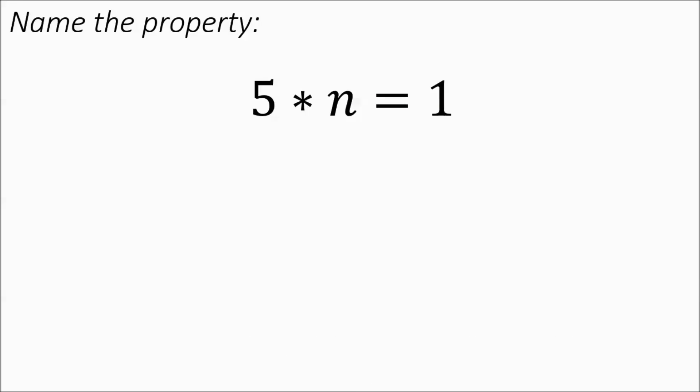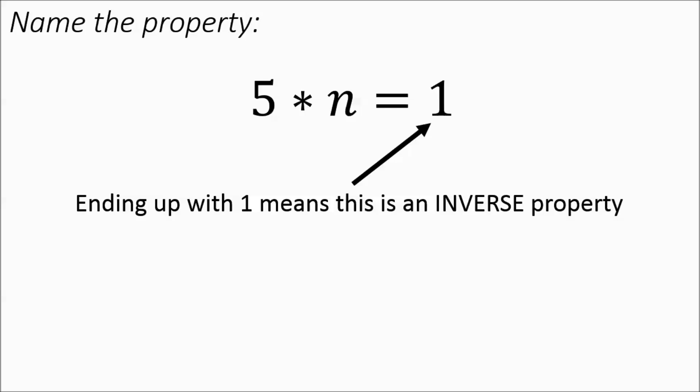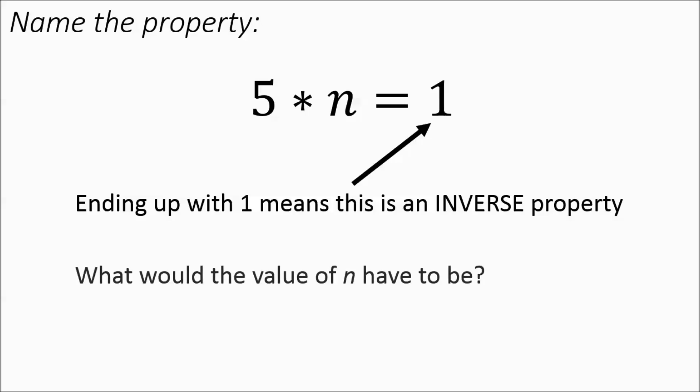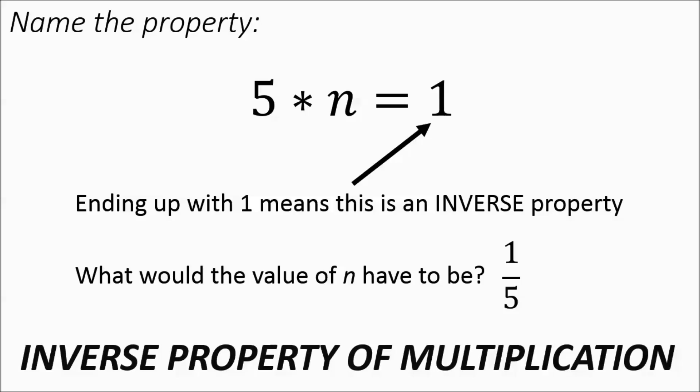We've got 5 times n equals 1. As soon as we see that we're ending up with 1, that means it's an inverse property. What would the value of n have to be? You're multiplying by 5 — that's going to have to be the reciprocal of 5. Think of 5 as 5 over 1 if you need to. This is definitely the inverse property of multiplication.